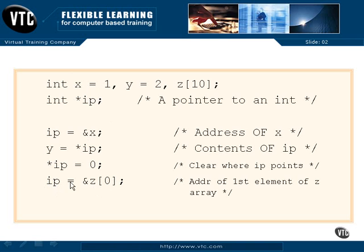x will not be modified because we didn't dereference. We didn't put an asterisk here. We are saying that ip will now be equal to the address of the first element of the z array, just like we said ip is set equal to the address of x. I hope that that makes some sense.